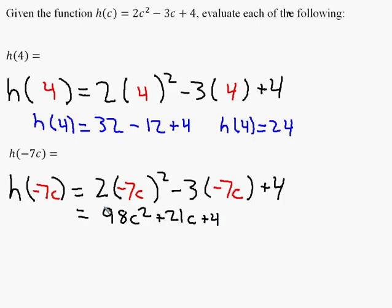So for my final answer, in simplified form, I have that h of minus 7c is 98c squared plus 21c plus 4.